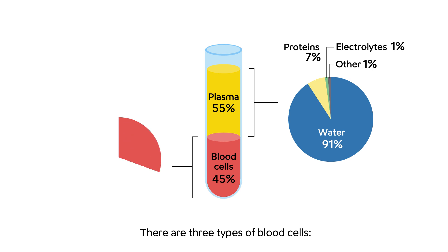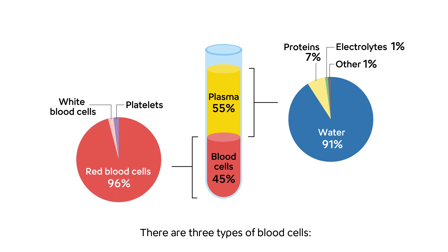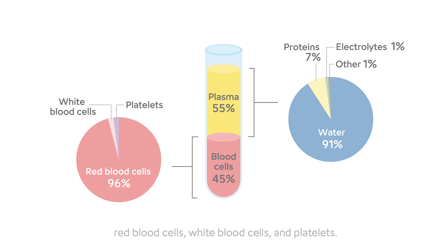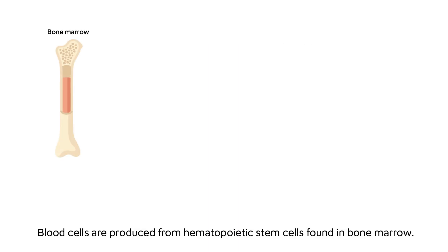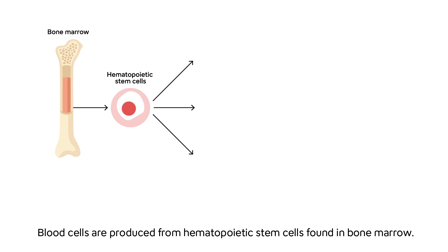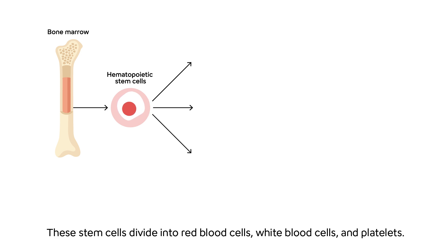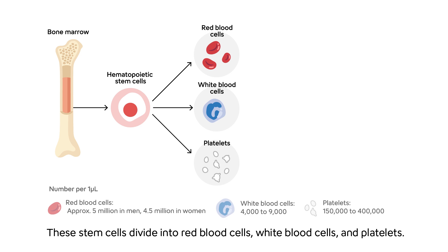There are three types of blood cells: red blood cells, white blood cells, and platelets. Blood cells are produced from hematopoietic stem cells found in bone marrow. These stem cells divide into red blood cells, white blood cells, and platelets.